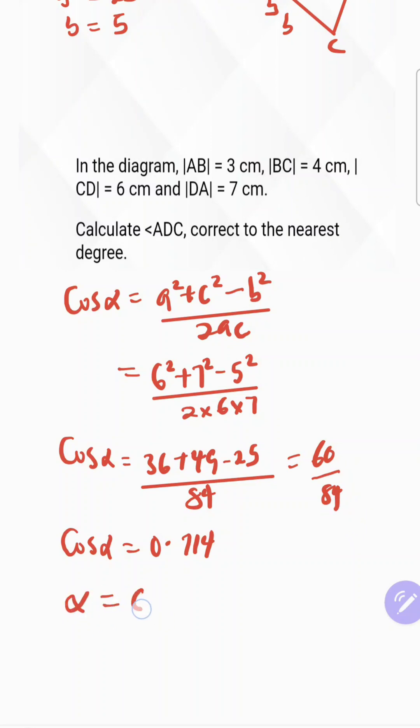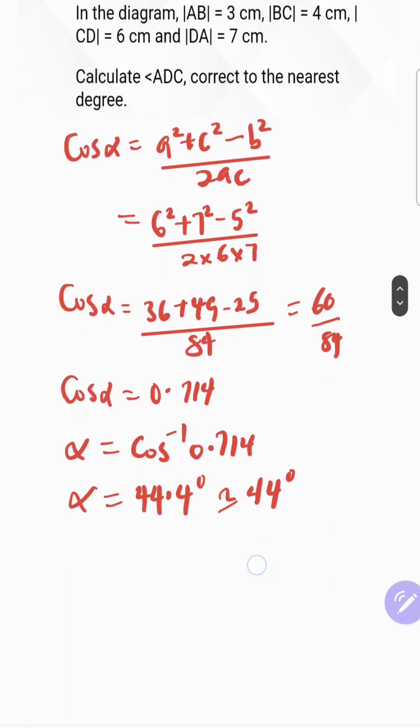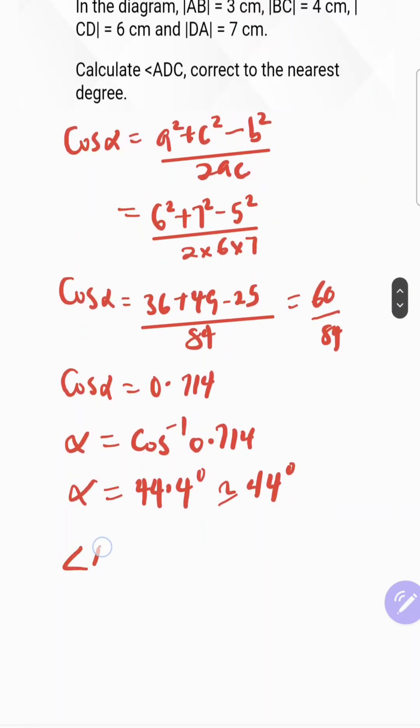Alpha can be cos inverse of 0.714. And finally, alpha is going to be 44.4 degrees, approximately 44 degrees to the nearest whole number. And what is our alpha? Which is angle ADC. It's approximately 44 degrees to the nearest degree.